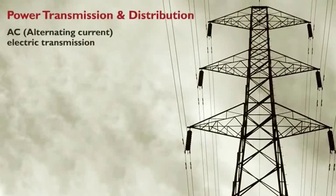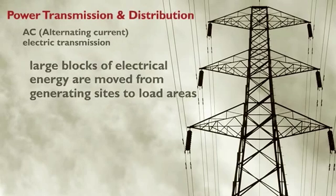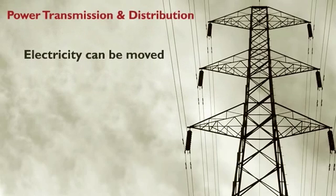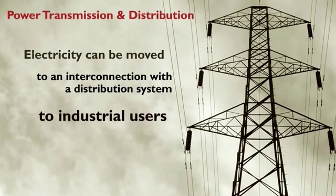AC, alternating current, electric transmission is the means by which large blocks of electrical energy are moved from generating sites to load areas that are at varying distances from the power generating plants. Electricity can be moved from the generating plant to an interconnection with a distribution system or even directly to industrial users.